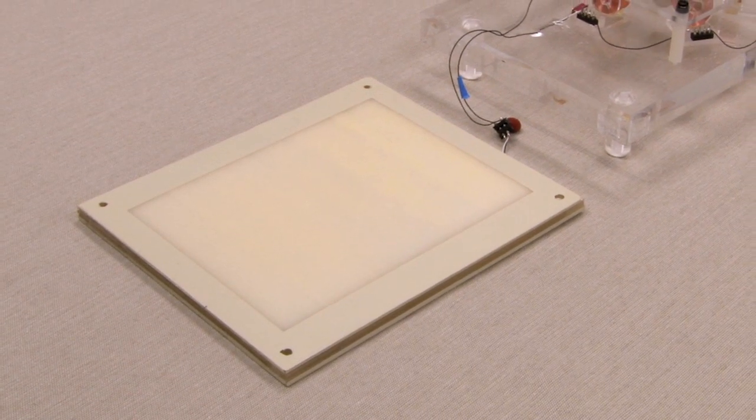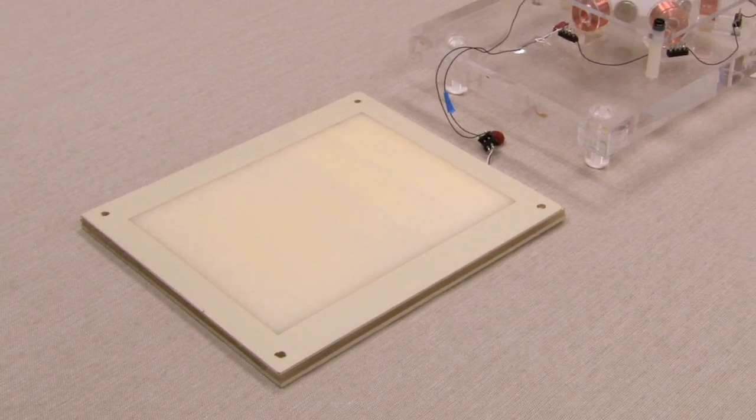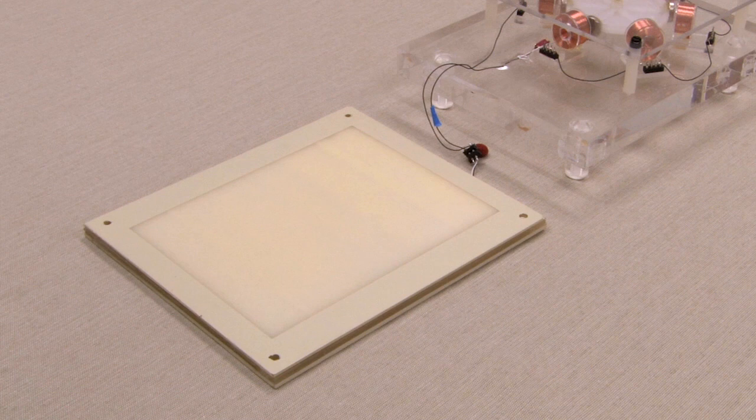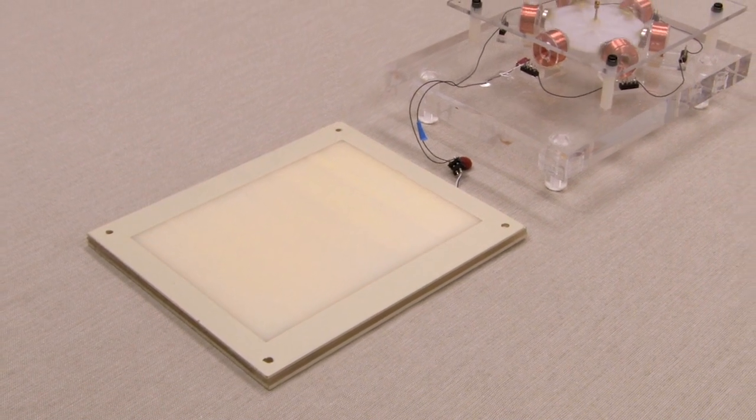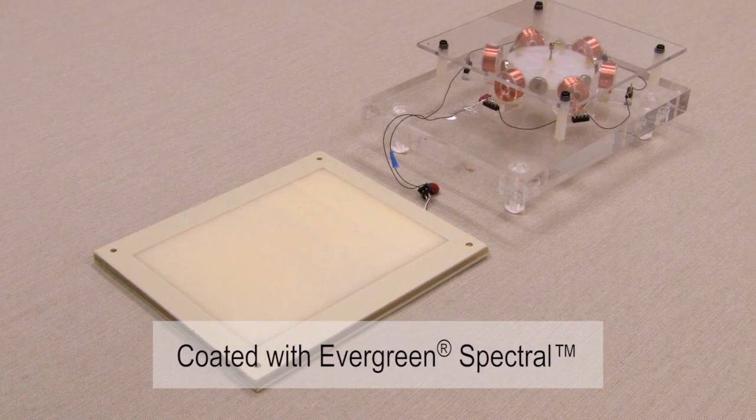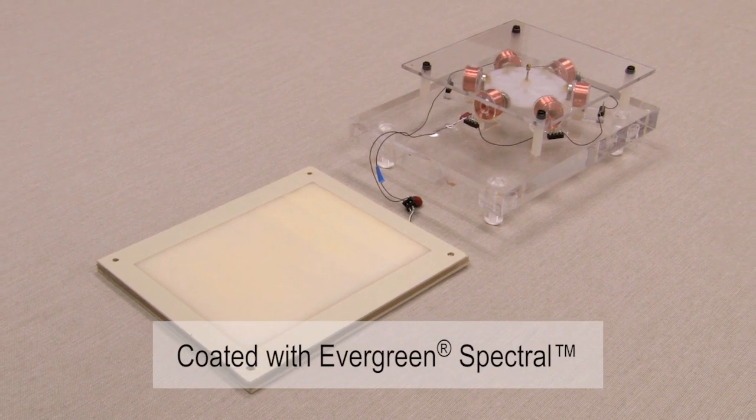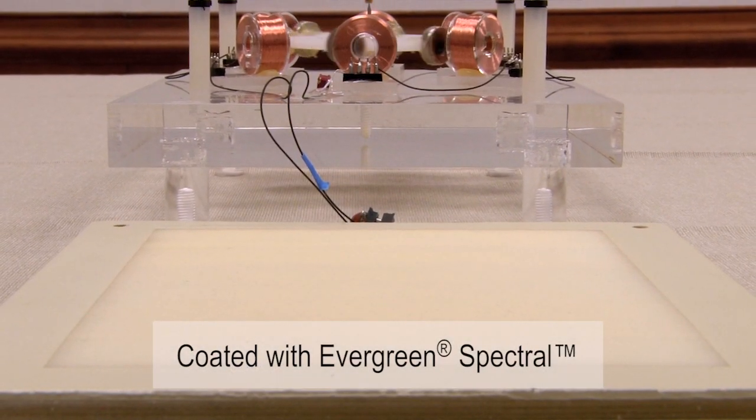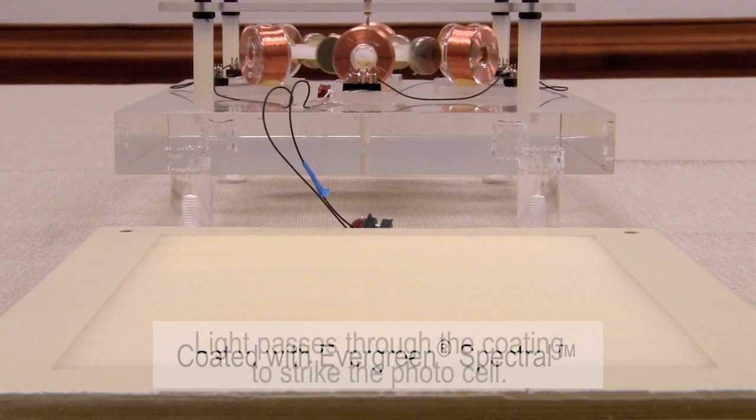This doesn't look like the black solar cell we're familiar with, and that's the idea. This panel contains a solar cell or photocell hidden beneath our Evergreen Spectral coating. 80% or more of the ambient light is passing through the coating and being collected by the photocell, which is powering the motor.